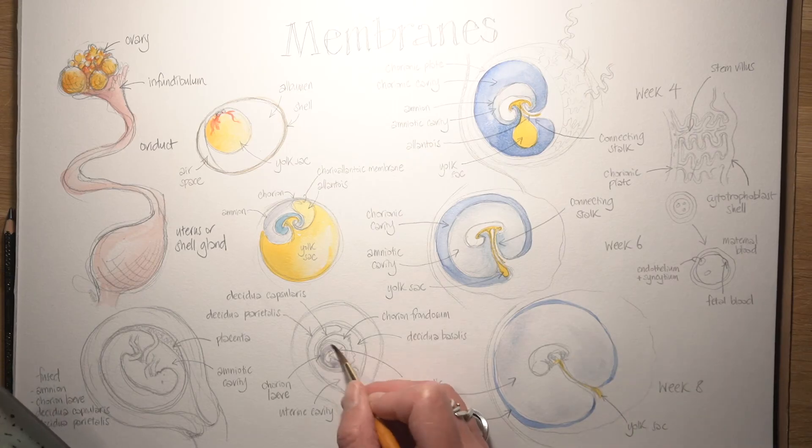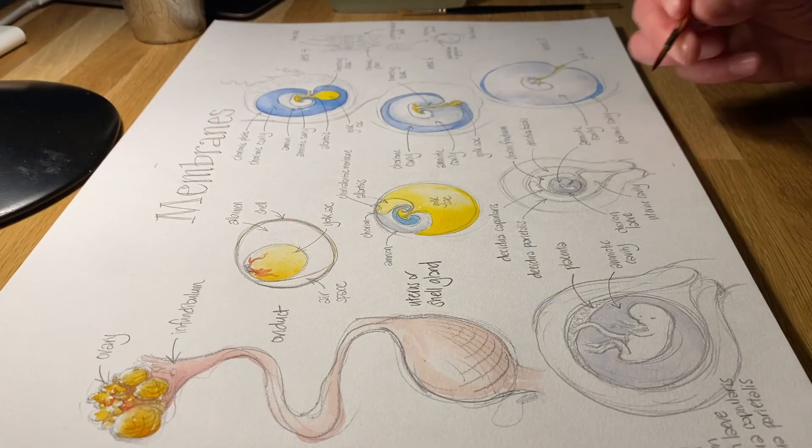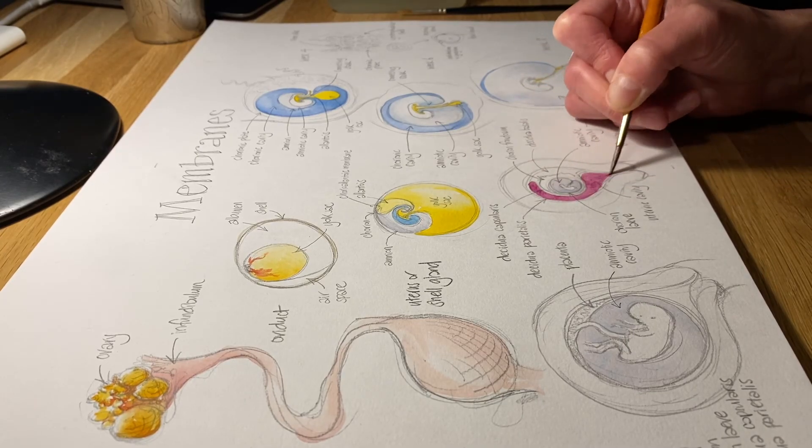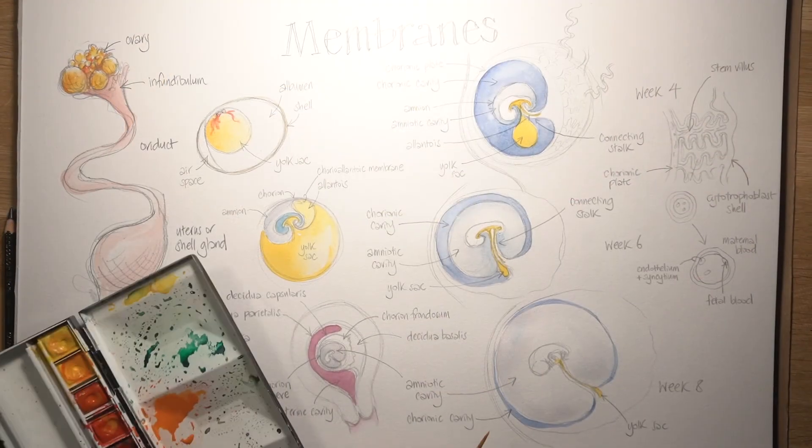There's the amniotic cavity again at week eight, but this time in the context of the uterus and over there week 12, so the end of the third month of development. Let's use another color just to highlight the uterine cavity, which has pretty much been obliterated by the time we get to the third month, the end of the third month.